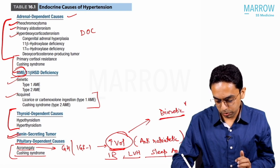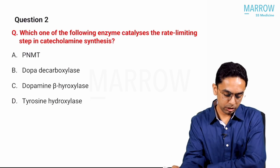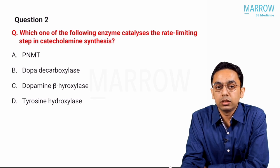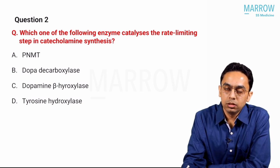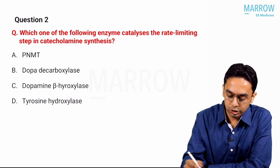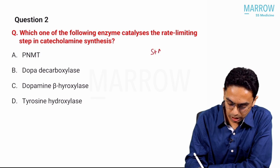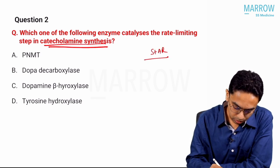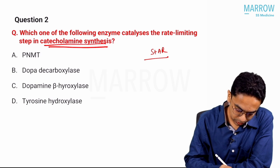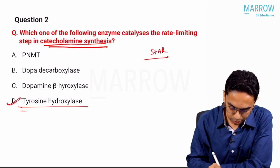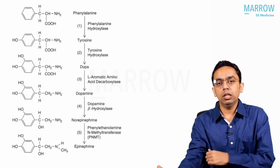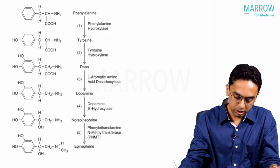Coming to question number two: which of the following enzyme catalyzes the rate-limiting step in catecholamine synthesis? We've already seen that in steroid synthesis it is the StAR protein. In catecholamine synthesis, the rate-limiting step is tyrosine hydroxylase. The basic pathway has many questions asked from it.